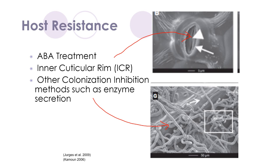Very lastly, the host has several possible resistance methods. Experiments have shown that ABA treatment, which aids in promoting stomata closure, helps decrease colonization, which further supports the idea that the plant is infiltrated through the stomata. Further, some resistant lines of plants have exhibited an intercuticular rim, which also prevents colonization by preventing infiltration through the stomata. Other colonization inhibition methods, such as enzyme secretion, cause ectopic mycelium formation on the leaf cuticle rather than infiltration into the intercellular space, leaving the plant relatively healthy.